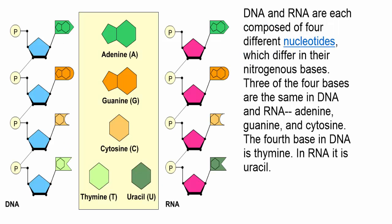DNA and RNA are each composed of four different nucleotides, which differ in their nitrogenous bases. Three of the four bases are the same in DNA and RNA: adenine, guanine, and cytosine. The fourth base in DNA is thymine. In RNA, it is uracil.